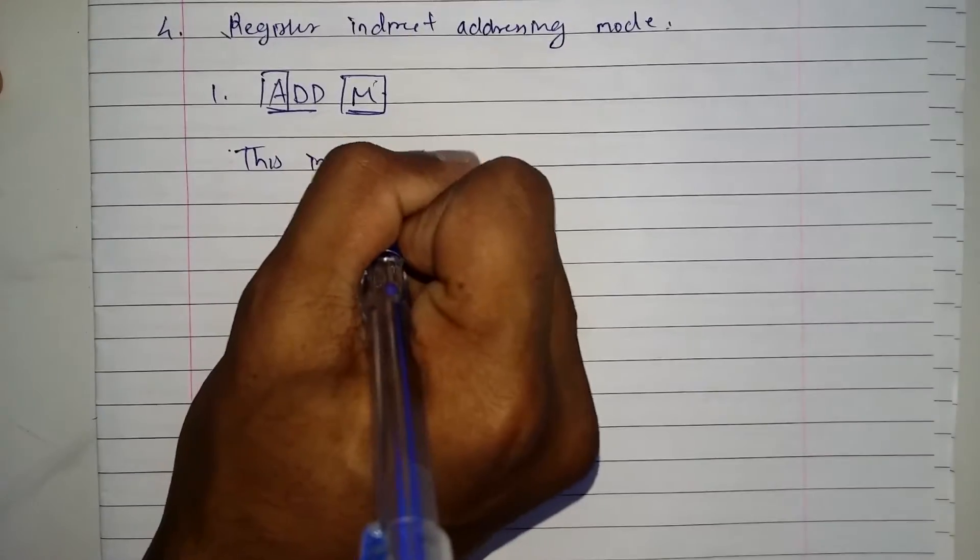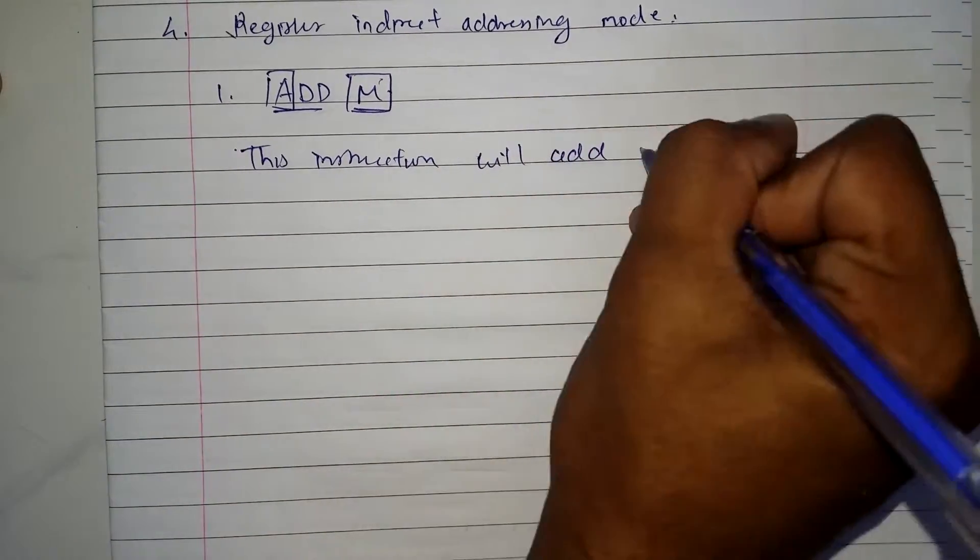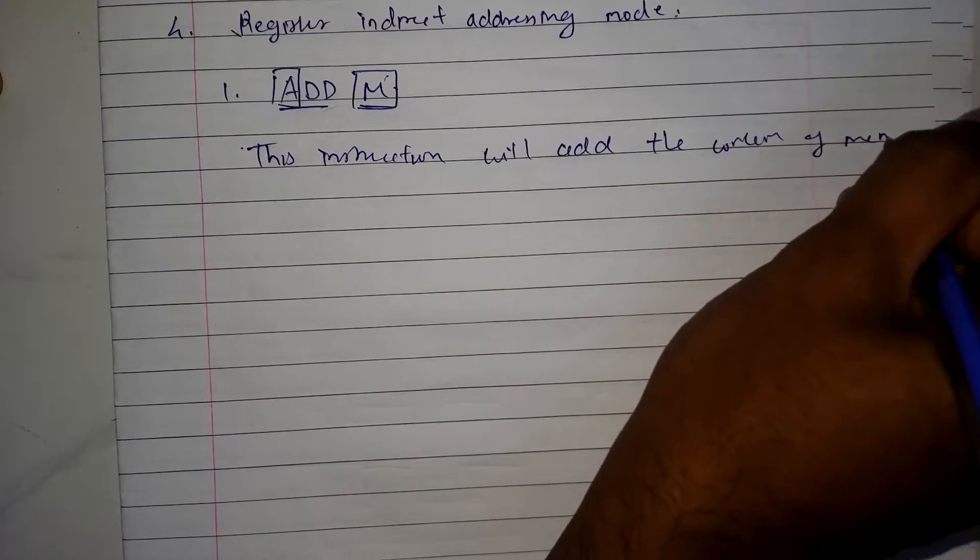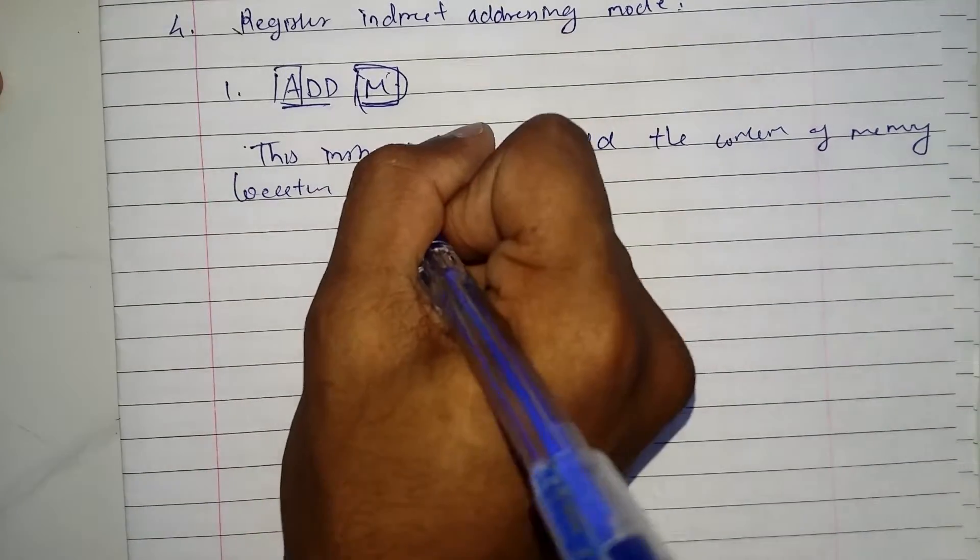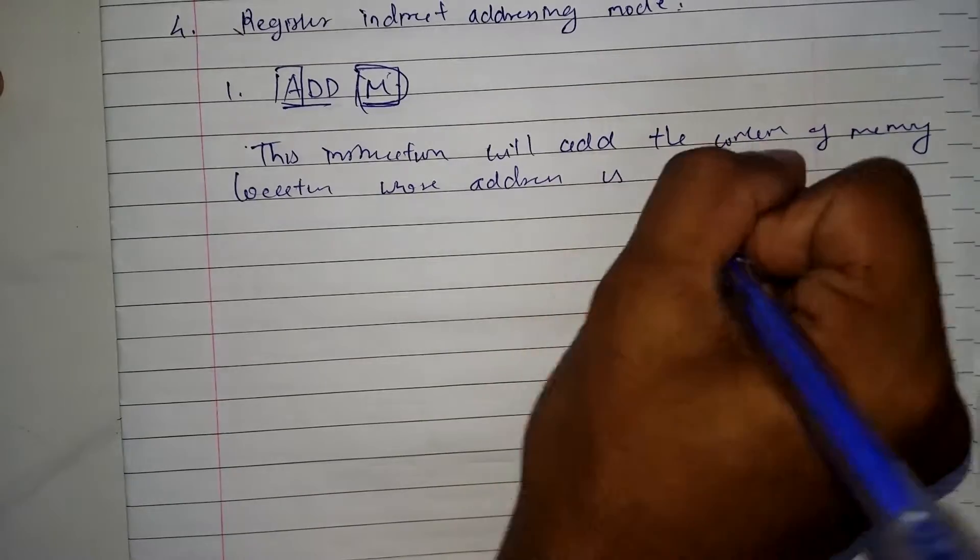So let me write what this instruction does. This instruction will add the content of memory location, that is, whose address is stored in HL pair, to the content of accumulator.